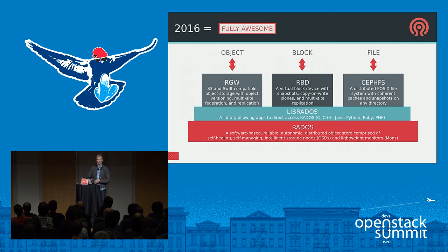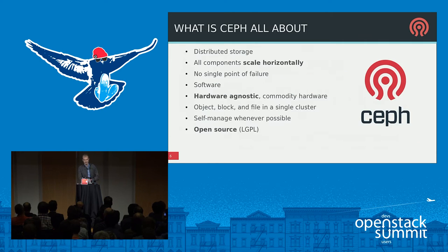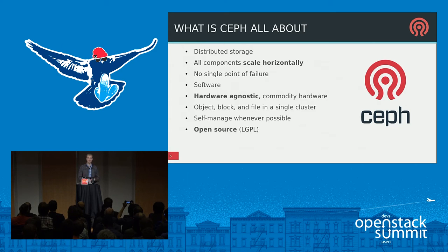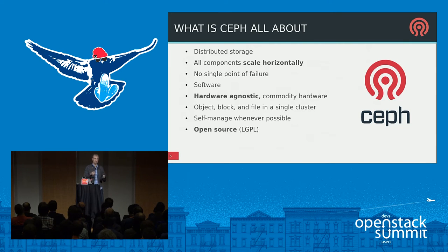Stepping back, what motivates the design of Ceph? First and foremost, Ceph is distributed storage designed from the get-go so all components scale horizontally — it's really about cloud scale. It's designed to have no single points of failure, it's a software-only solution, hardware agnostic, so you can deploy it on commodity components of your choosing. We provide object, block, and file interfaces in a single cluster, and whenever possible we make the system self-managing, because at scale things are going to go wrong.